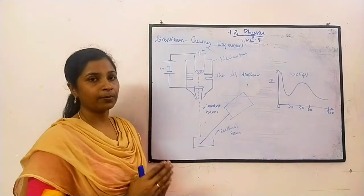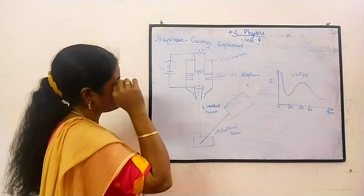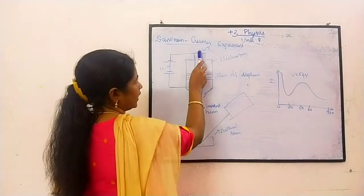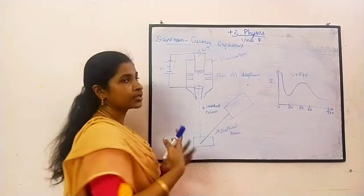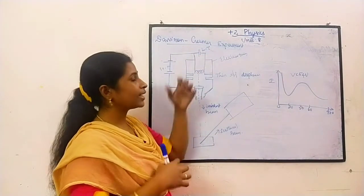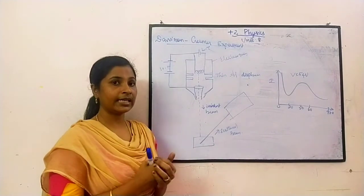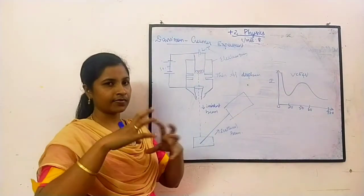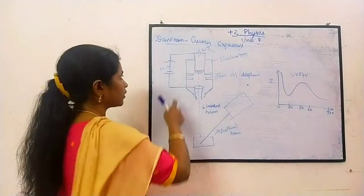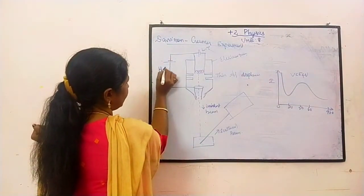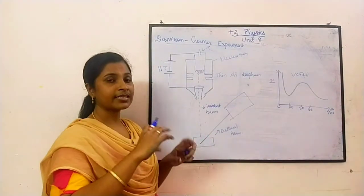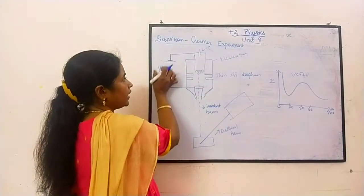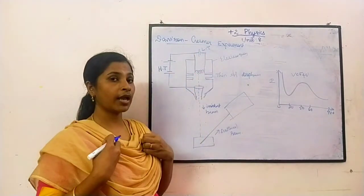This is the experimental setup of Davison and Germer. It consists of an electron gun like this. There is a filament connected to a low tension battery. This battery will provide heat to this filament. We know that when we heat a filament, what happens? Electrons will eject. In order to eject the electrons, we are using a high tension battery. What this high tension battery does is it will make the electrons emit out from the filament.